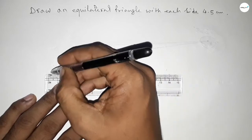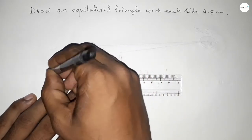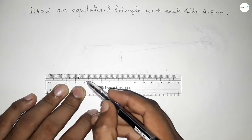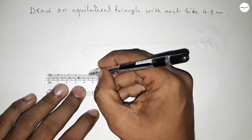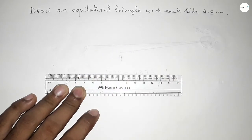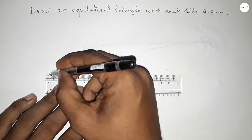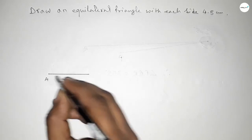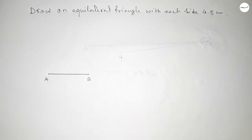So this is starting 0, 1, 2, 3, 4, and this is 4.5. First taking a length 4.5 centimeters by scale by this way. Now this is A and B, so AB equal to 4.5 centimeters.